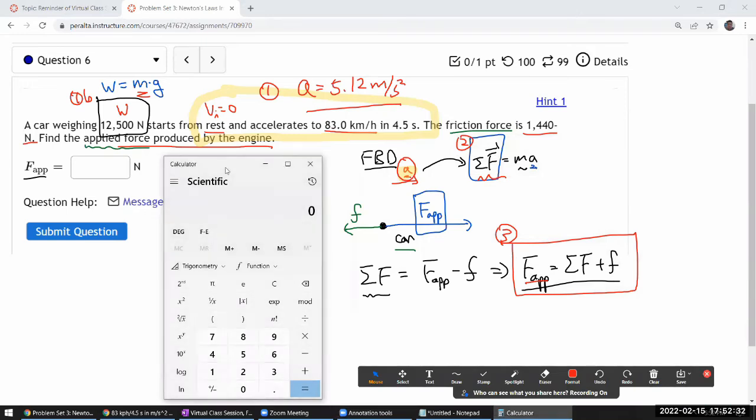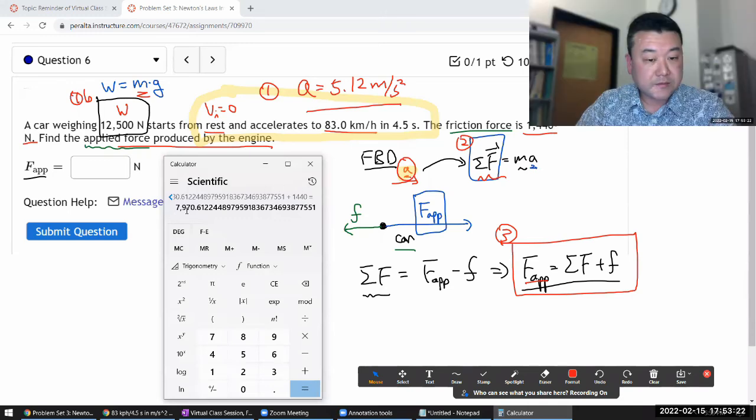So I need a mass. So it's going to be the weight 12,500 Newton divided by g, 9.8 meters per second squared. And the units will work out to be kilogram. So let me store this into memory. So 1,275.5 kilograms of mass. So the net force is going to be this quantity times the acceleration, 5.12. That's the net force. Step number two. Step number three. Take the net force, add the friction force. 1440 plus 1440 Newton. And that should be the applied force. 7971 Newton.